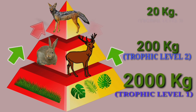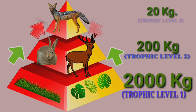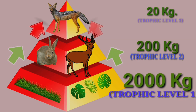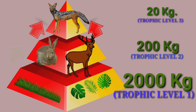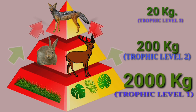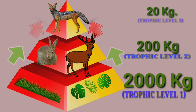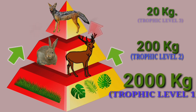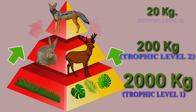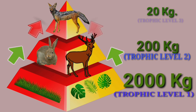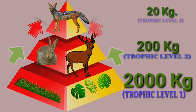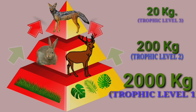Similarly, 10% of 200 kg is equivalent to 20 kg. So 20 kg of biomass would be available for the top predator of that ecosystem.